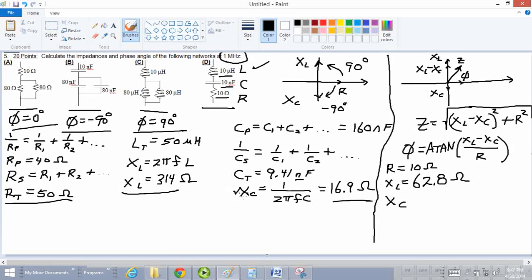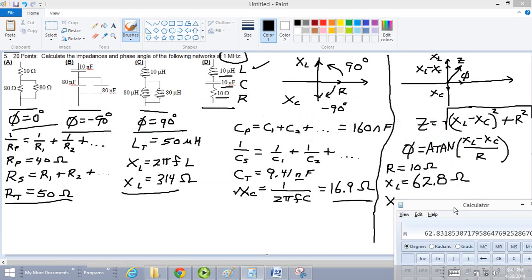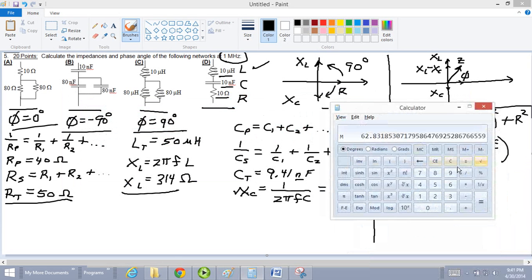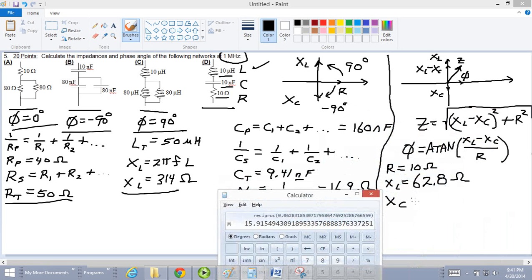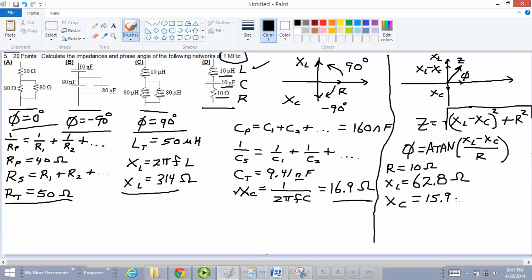XC, same formula as this, except with a different C. C is 10 nanofarads instead of 9.41. It ought to be really close. I'm going to store this in memory because I'm going to need it later. XL minus XC. So when I calculate XC, it's 2 pi times the frequency, 1 times 10 to the 6th, times C is 10, times 10 to the negative 9th power equals, that is the reciprocal of XC, and this is XC, 15 point. So instead of 16.9, it's 15.9.